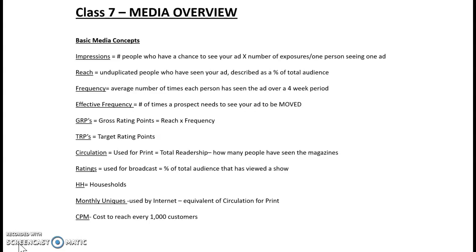Reach: unduplicated people who have seen your ad, described as a percent of the total audience. Frequency: average number of times each person has seen the ad over a four-week period. Effective frequency: how many times do you have to see an ad to start to move down the purchase funnel? It used to be three — we used to say you had to have at least three exposures to start to move. GRPs: gross rating points. It's reach times frequency.